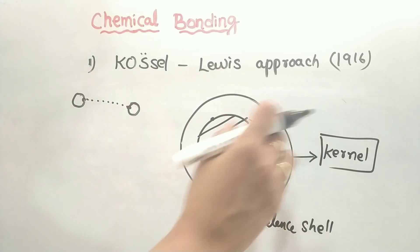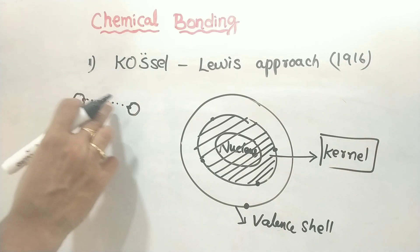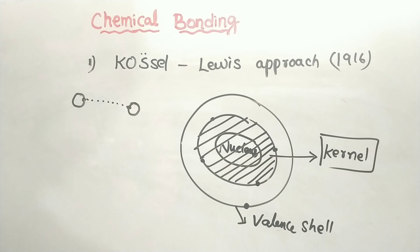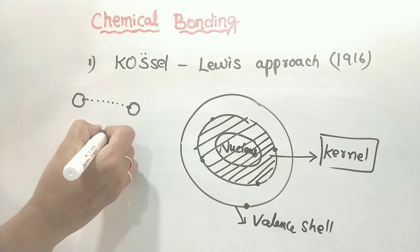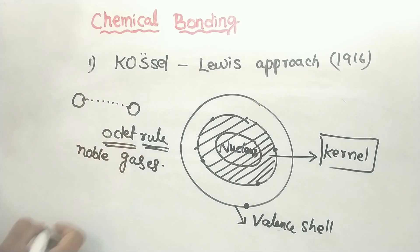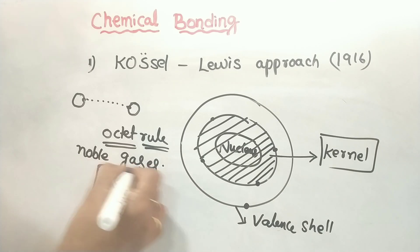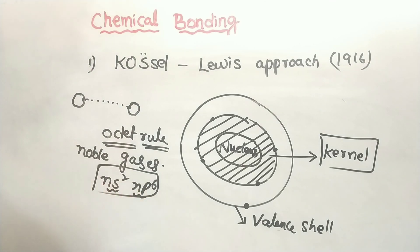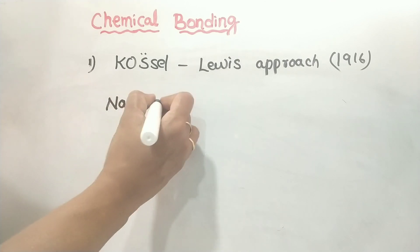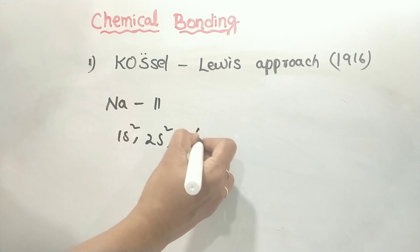Why do we divide the atom into two types? Because we use the valence shell electrons in bond formation. This is the important role of valence shell electrons. We also have the octet rule. If we choose noble gases, we look at the electronic configuration of the noble gases — the outermost shell is fully filled: 6 plus 2 is 8.